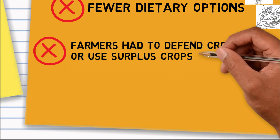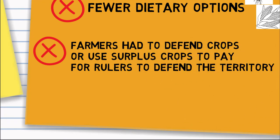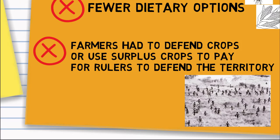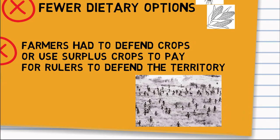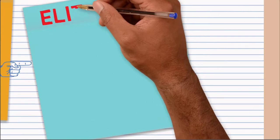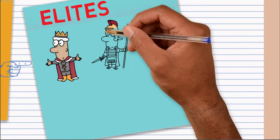And then on top of that, the farmers had to defend their crops or use surplus crops to pay for rulers to defend the territory. And so what this did is the Agricultural Revolution actually became the development or the building of the elites.